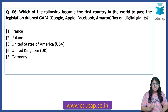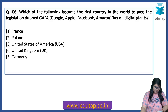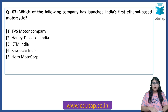Which of the following became the first country in the world to pass legislation dubbed GAFA — Google, Apple, Facebook, Amazon — tax on digital giants? The answer is France. France has become the first country and this is called GAFA tax. GAFA is also a term which can be asked in the examination, so make sure you know this.